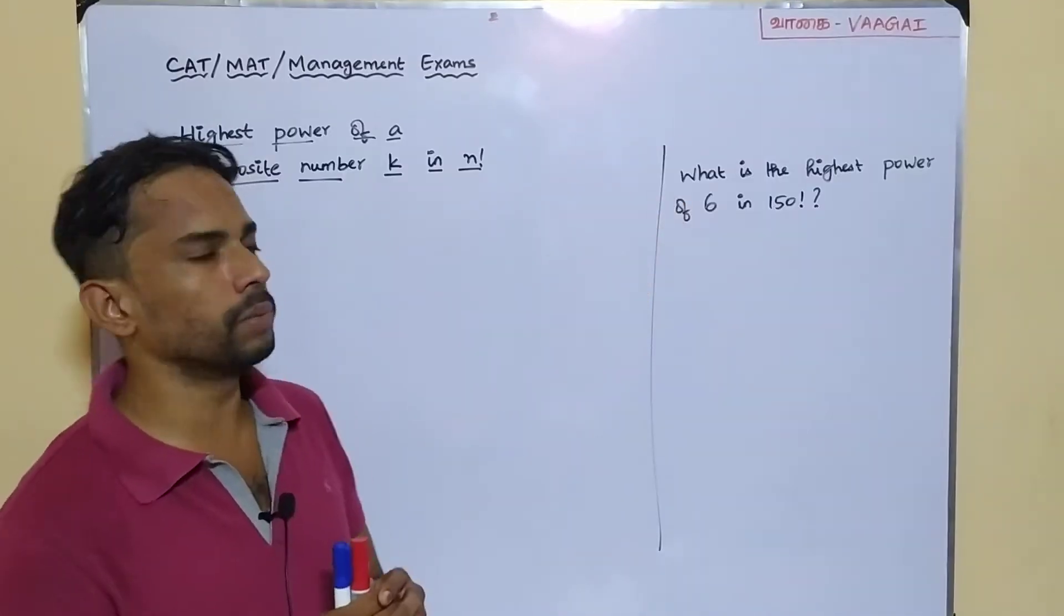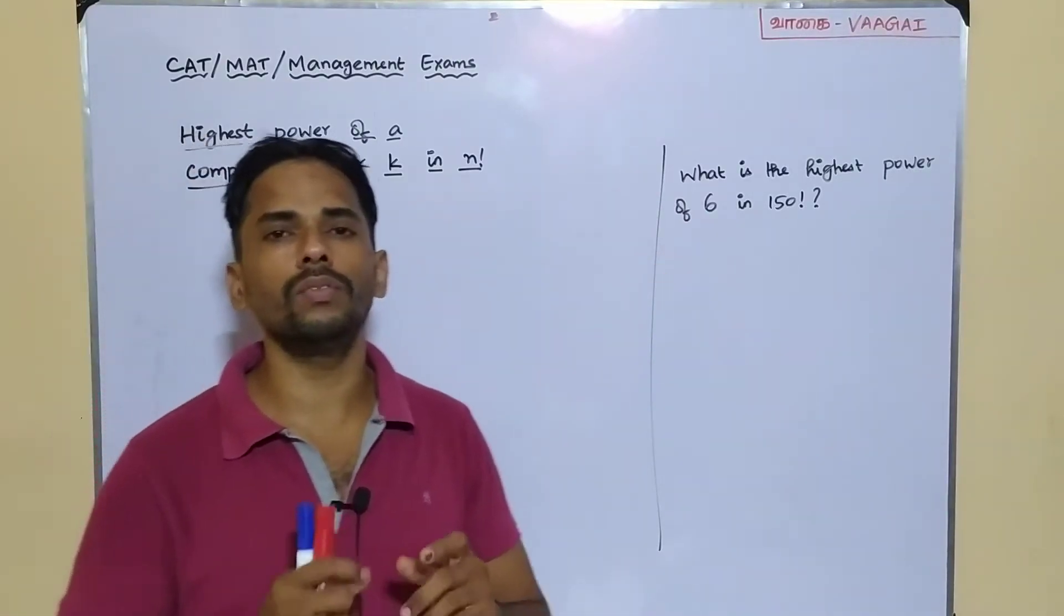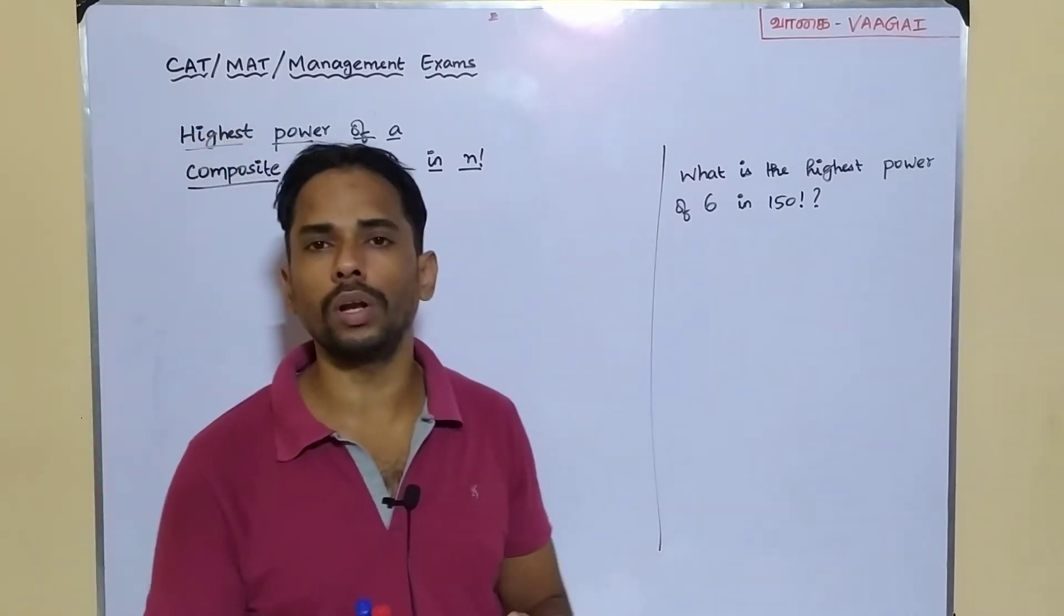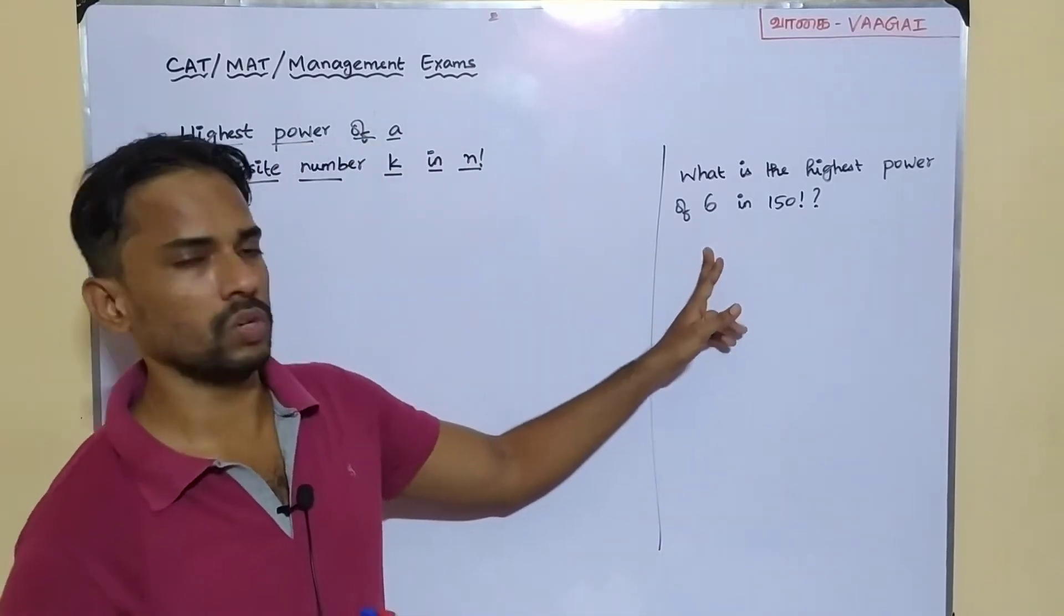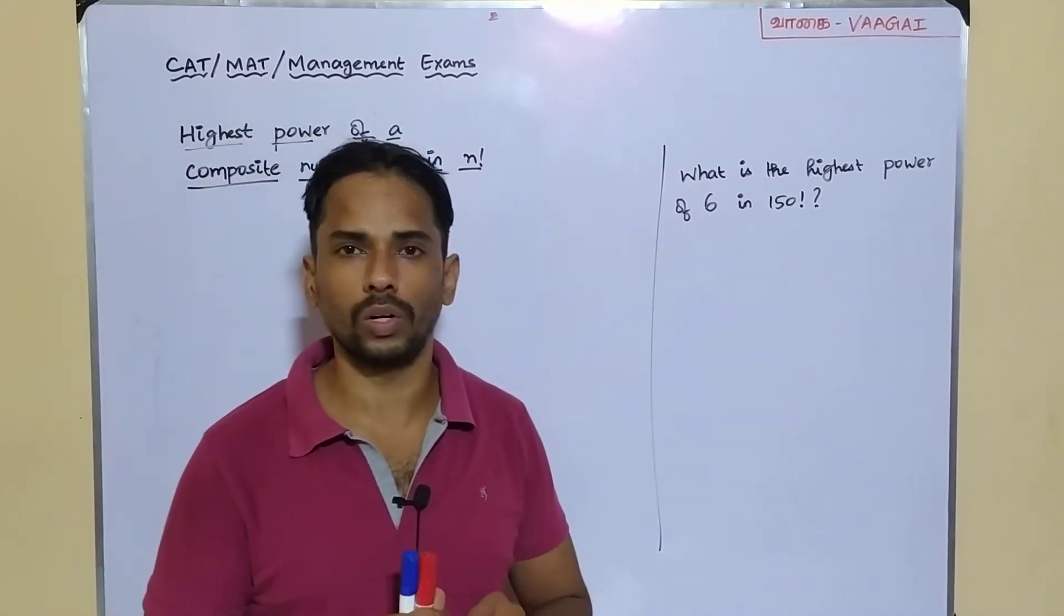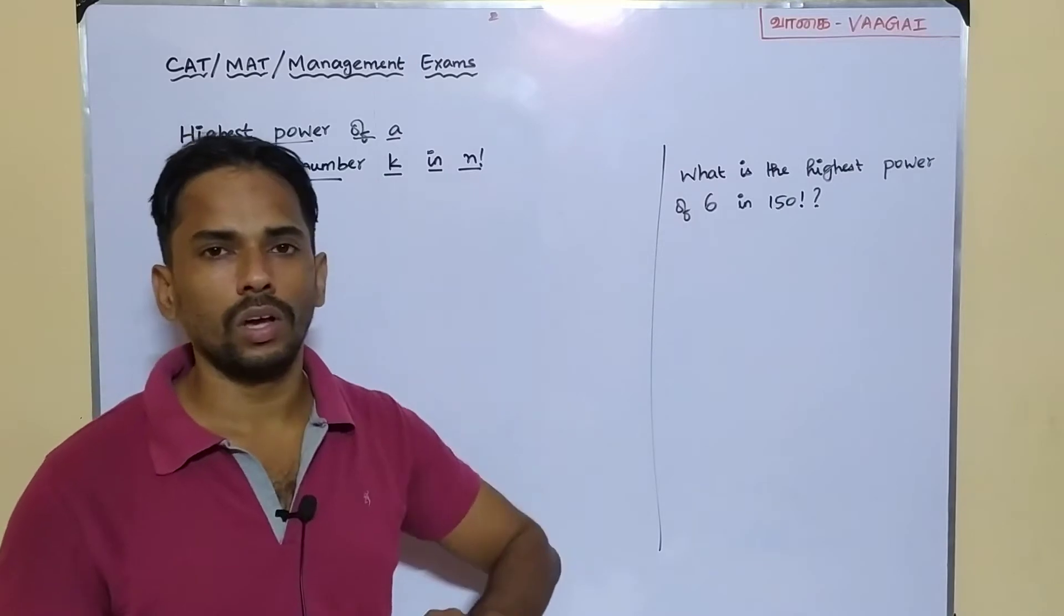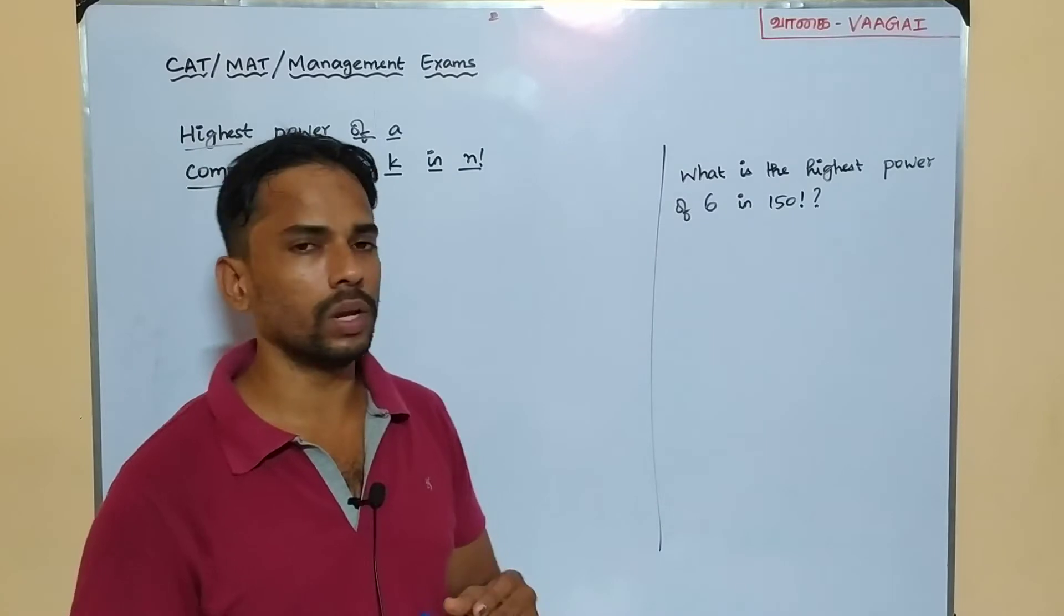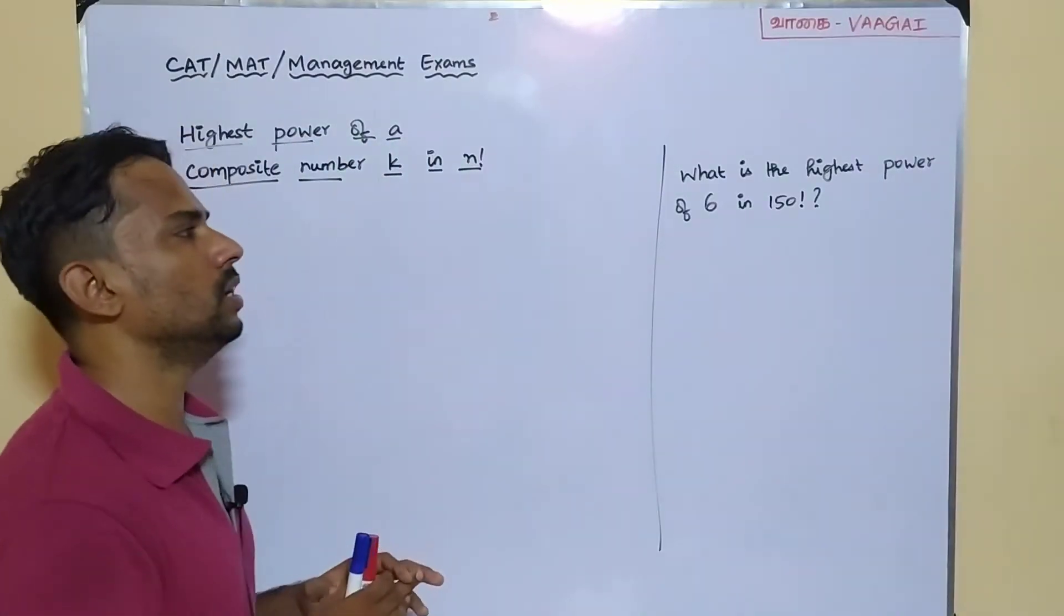We have got a problem here. What is the highest power of the number 6 in 150 factorial? It should be noticed that the number 6 here is not a prime number, it is a composite number. And we are supposed to find the highest power of 6 which we can find in this 150 factorial. Or otherwise, I can say 6 power x inside 150 factorial in such a way that my x is the highest number. This is the objective of this session.